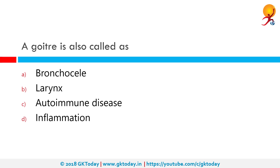Goiter is also known as Bronchocele. Goiter is a swelling in the neck resulting from an enlarged thyroid gland. It is associated with a thyroid that is not functioning properly. Worldwide, over 90% of these cases are caused by iodine deficiency.